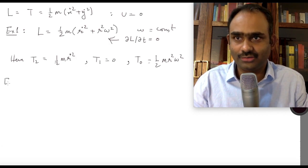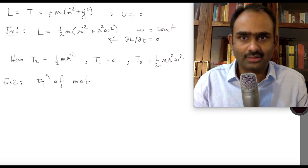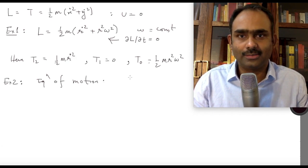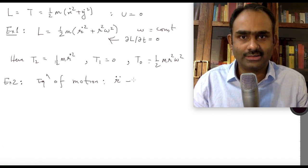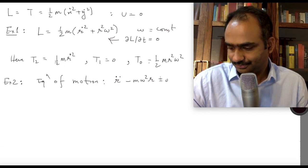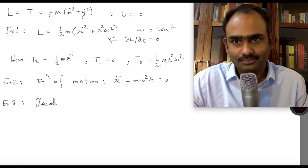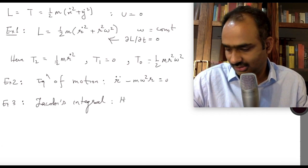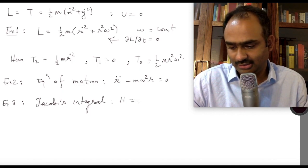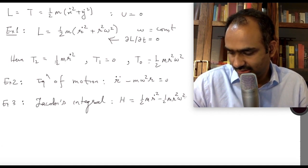Exercise 2: find the equation of motion for this system using the Euler-Lagrange equations. The equation of motion should be r̈ − ω²r = 0. Exercise 3: find the Jacobi's integral H using the formula H = Q̇(∂L/∂Q̇) − L. Show that H = ½mṙ² − ½mr²ω².